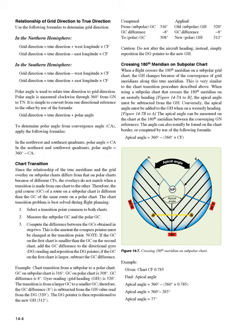Computed and applied: from subpolar GC 316 degrees (old subpolar GH), GC difference — polar GC minus 8 degrees equals 312 degrees GC; GC difference 308 degrees; new polar GH: 320 degrees minus 8 degrees equals 312 degrees. Caution: do not alter the aircraft heading. Instead, simply reposition the DG pointer to the new GH.